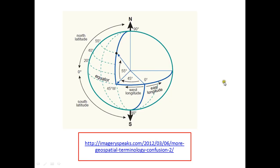This is the spherical coordinate system, which we must all know to understand the geographic coordinate system. If we see the equator at zero degrees, all the lines parallel to the equator are the latitudes, and the perpendicular lines are the longitudes. This is the prime meridian at zero degrees.